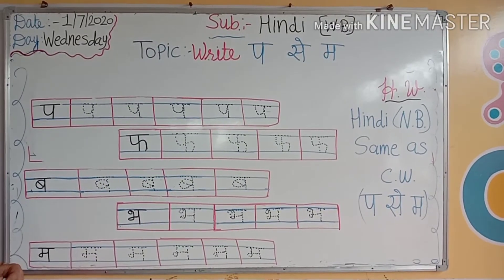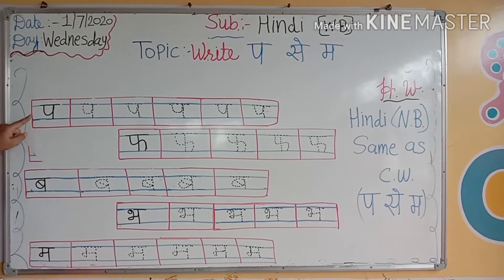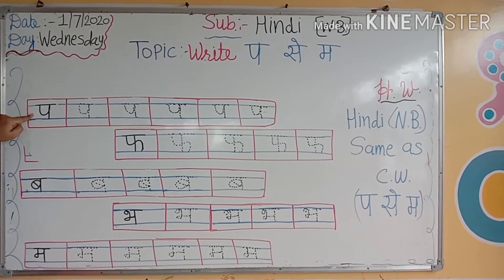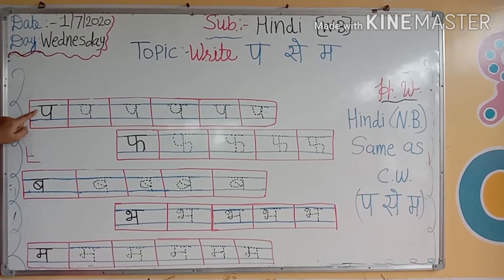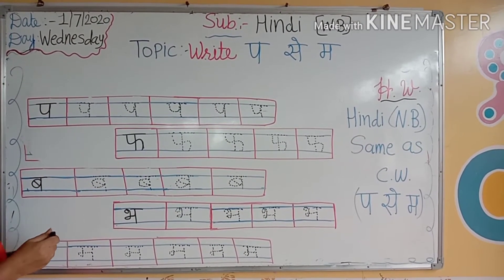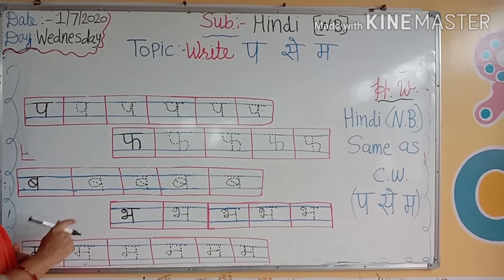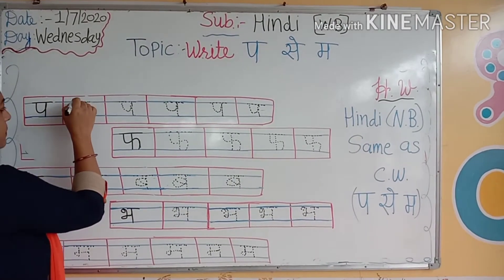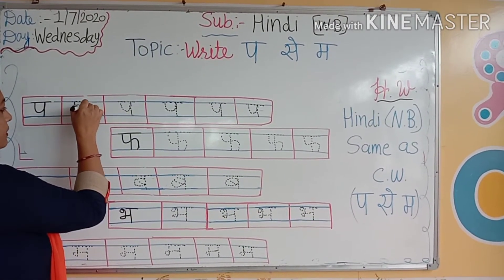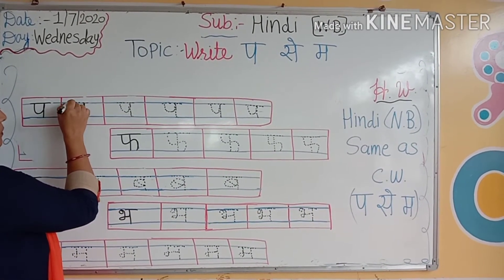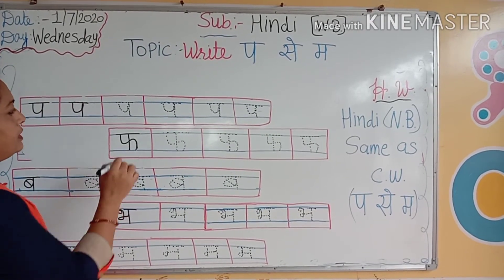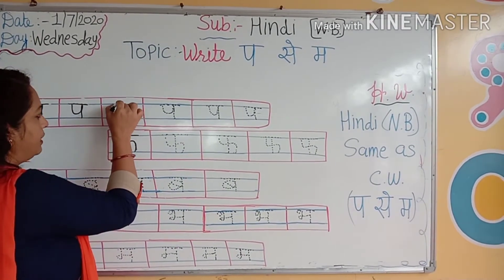Let's start it. Kids, look here. Kya hai yeh? Par. Par se kya hota hai, kids? Kaun batayega? Par se — patang. Par se kya hota hai? Par se patang.